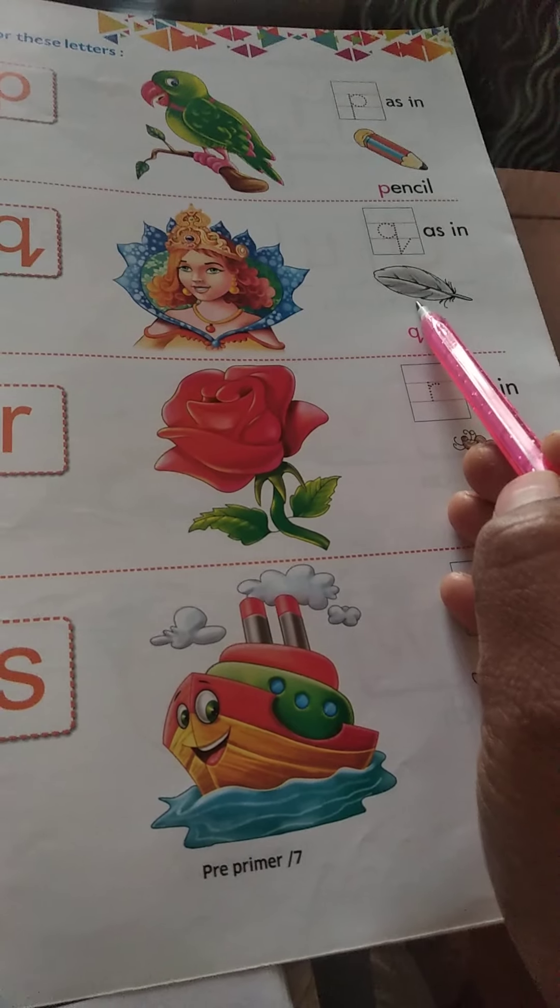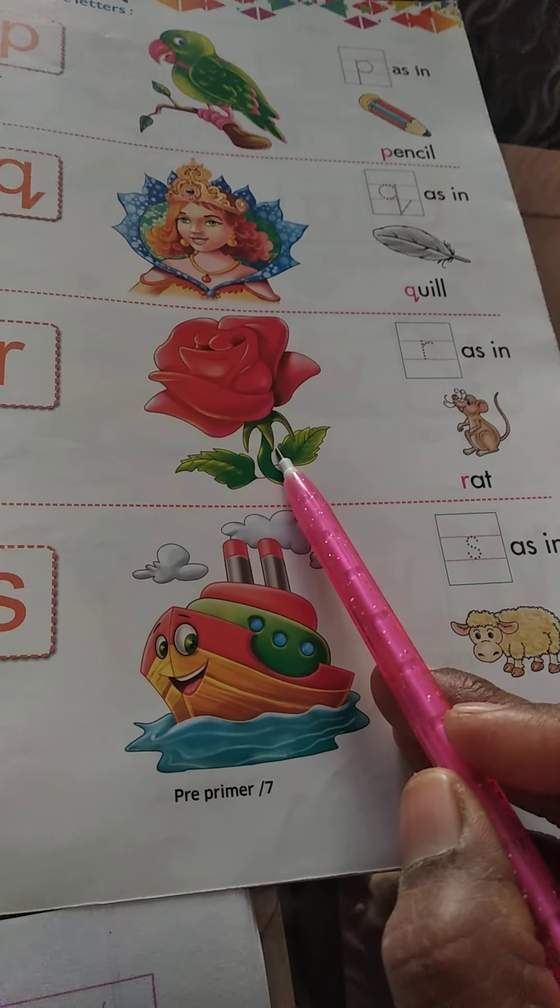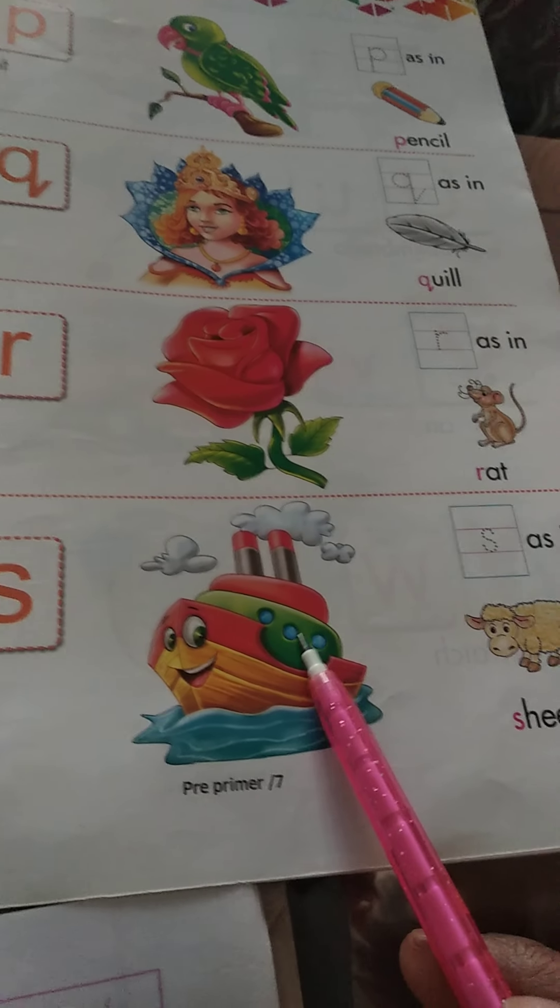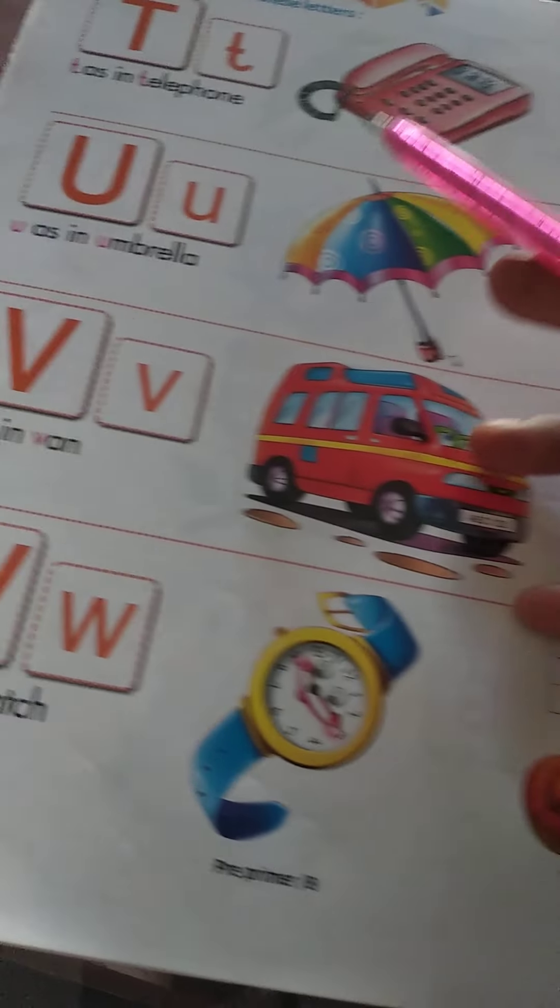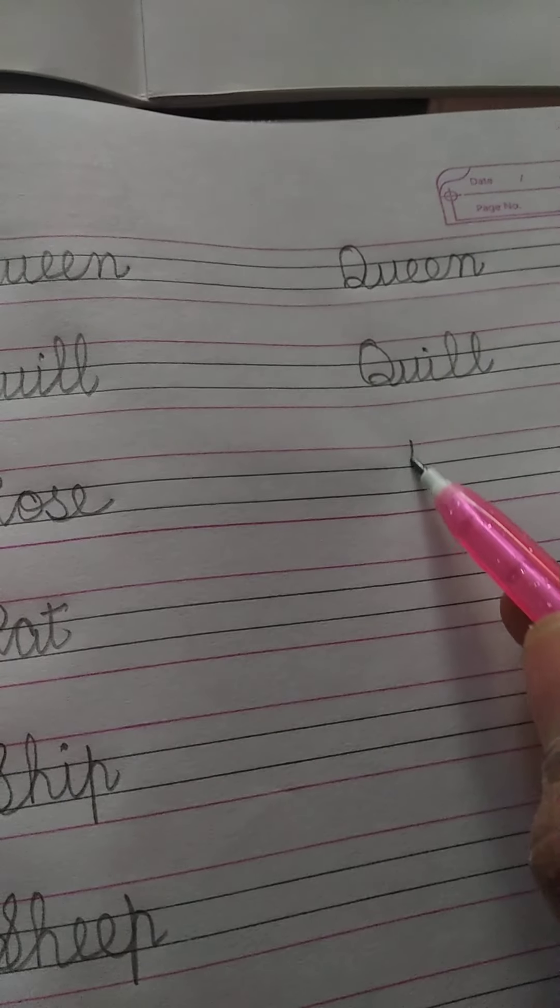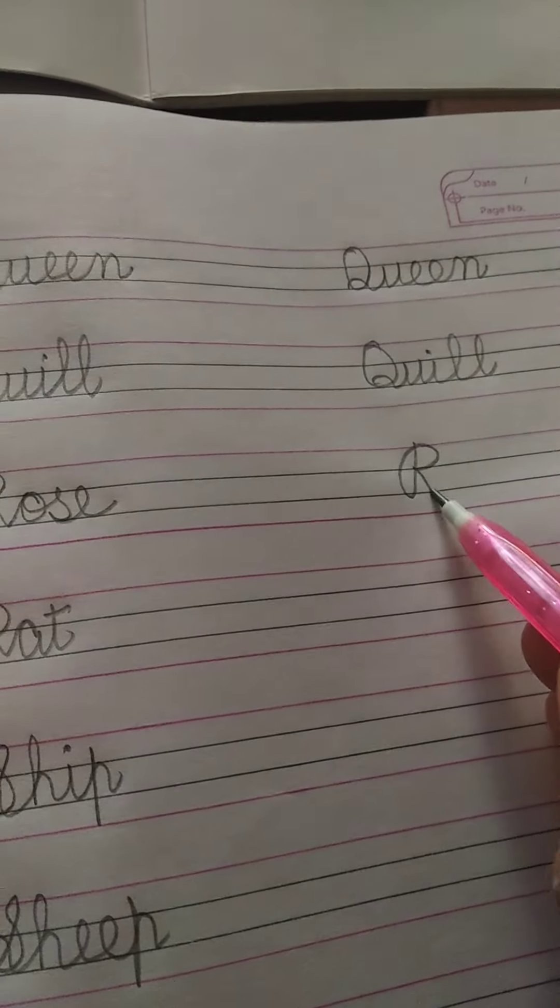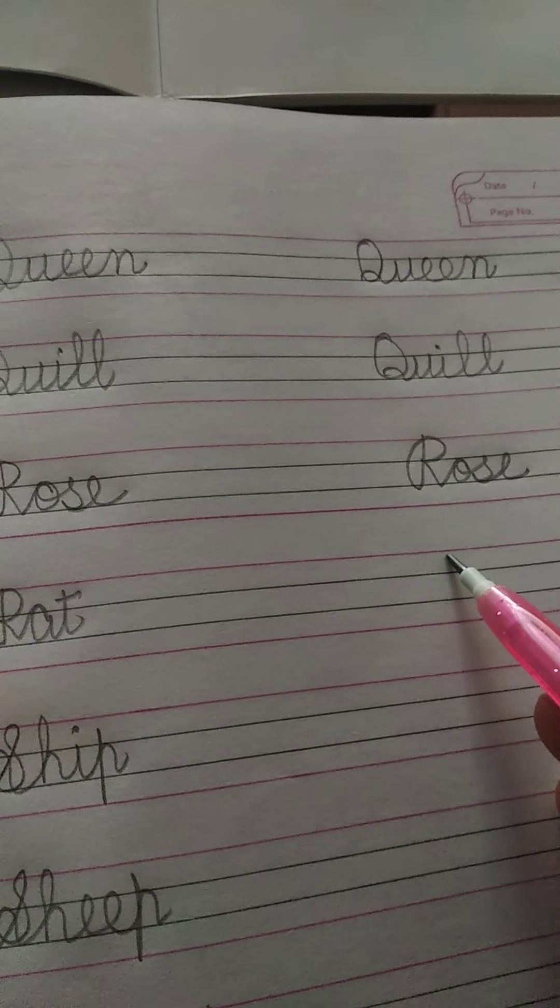So again you write here Queen Q U E E N Queen, Quill Q U I L L Quill in your book. Queen and Quill, Queen and Quill, rose and rat, rose and rat, ship, sheep, ship, sheep, telephone, tree, telephone, tree.